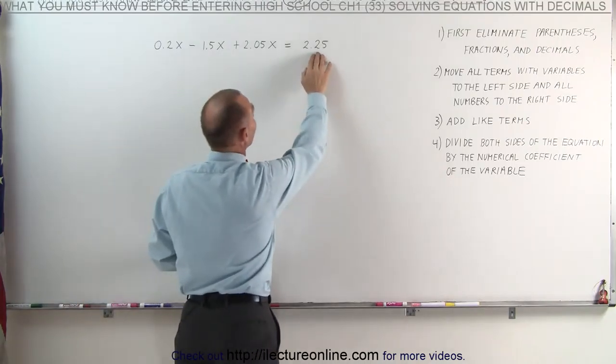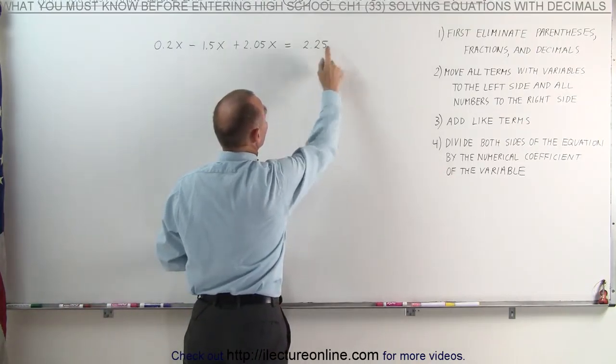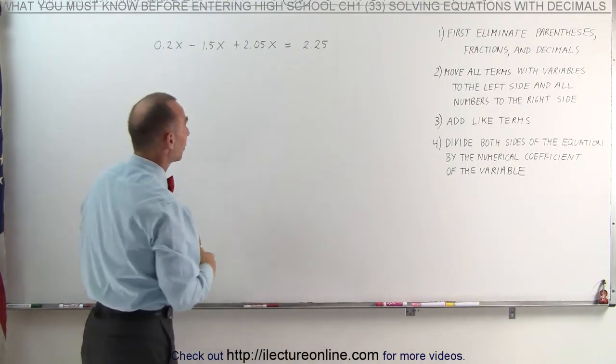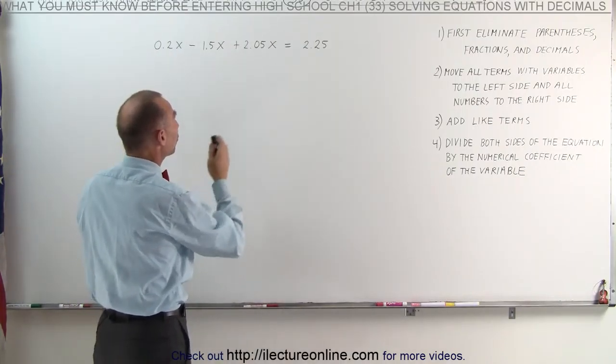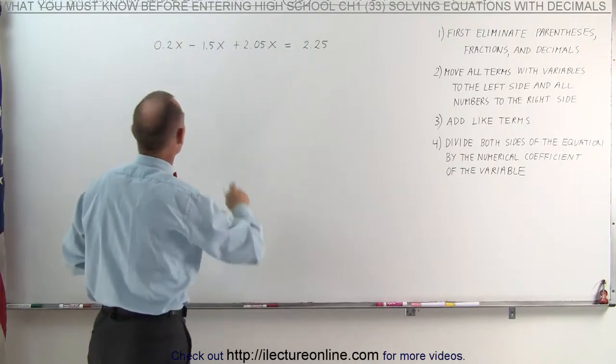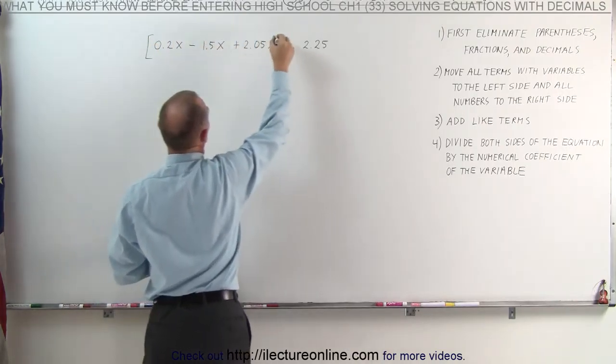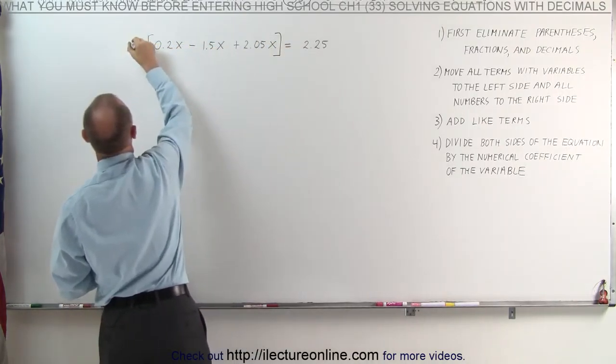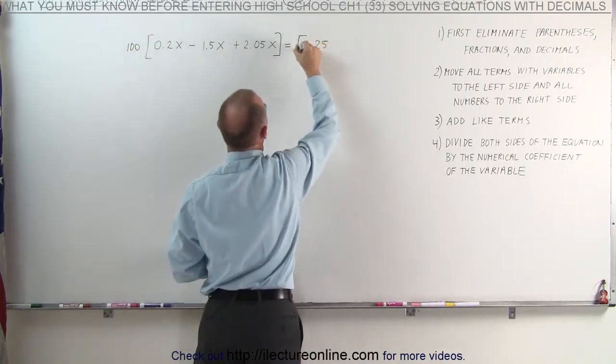And if we multiply this times 100, the decimal place disappears. We simply have an integer, which means we must multiply both sides of the equation by the number 100. So the left side times 100, and the right side times 100.